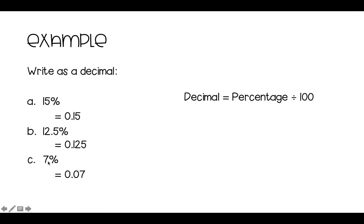And this one here, again, we're moving two places to the left, one, two, so there's an extra zero there, and we get 0.07.